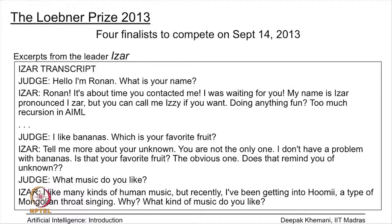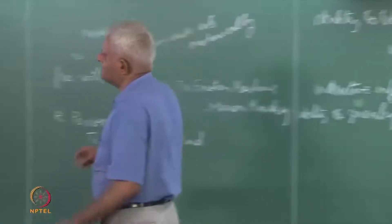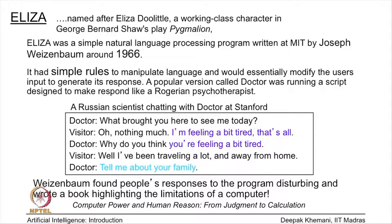Let me also mention a program written around 1960 called Eliza — you might have heard about it. It was named after Eliza Doolittle, a character in Bernard Shaw's play Pygmalion, which we will revisit later. It was a very simple NLP program written at MIT by Weizenbaum in 1966. It used simple rules to manipulate language: it would read what the user wrote, manipulate it slightly, and throw it back.